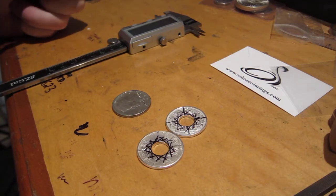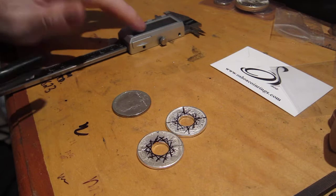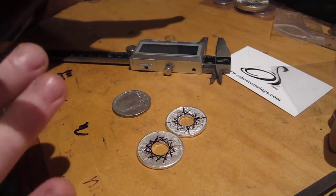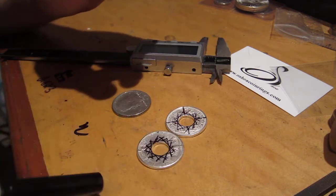Okay, so for those of you who don't have a center finder tool and do have a set of calipers, here's a way that you can mark the center of your coin. Today we're going to work on half dollars.